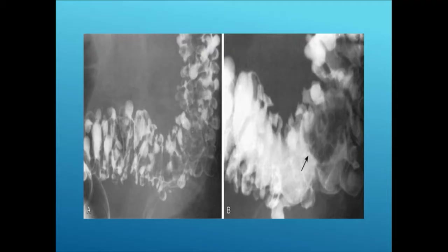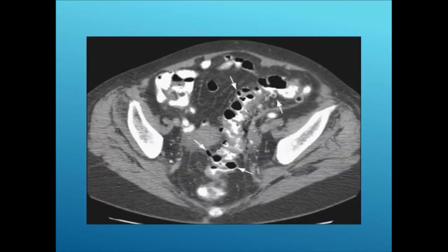There's a filling defect where the arrow is on the barium x-ray — it could be stool, or very importantly, it could be a mass — a cancer sitting in the middle of those diverticuli. On CT scan, diverticuli appear as air-filled pockets in the sigmoid colon, with very high sensitivity and specificity for diverticulosis.